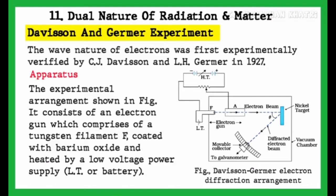The experimental arrangement shown in figure consists of an electron gun which comprises of a tungsten filament F, coated with barium oxide and heated by a low-voltage power supply, L-T or battery.